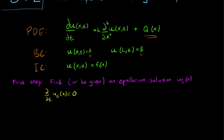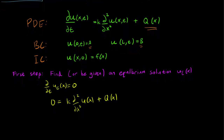Nevertheless, equilibrium solutions still solve the differential equation. The left-hand side is 0, so we have 0 = k ∂²u/∂x² + Q(x). These are solutions that solve the equation and also satisfy the boundary conditions, so u(0) = a and u(L) = b. Note that for equilibrium solutions, we do not consider the initial condition, but the solution does satisfy every other part of the differential equation in addition to not being dependent on time.